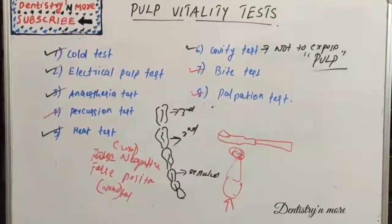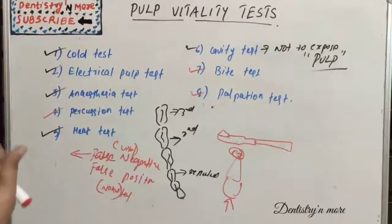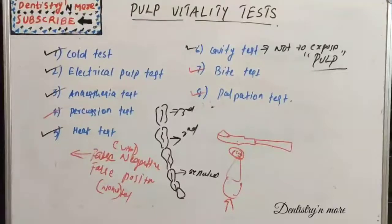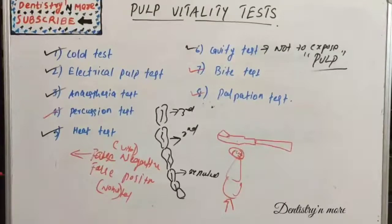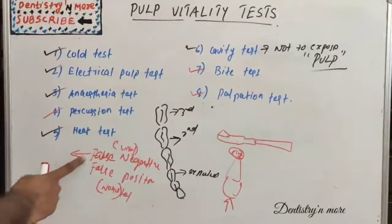Occasions when we get false negative results — where the pulp test shows non-vital but the tooth is actually vital — include: recently traumatized tooth, recently erupted tooth with an immature apex, patients with high pain threshold, tooth with calcified canals, low battery during electric pulp testing, and patients taking painkillers or psychiatric drugs.